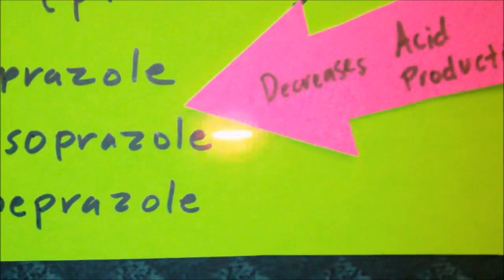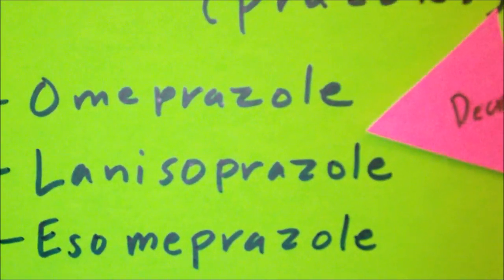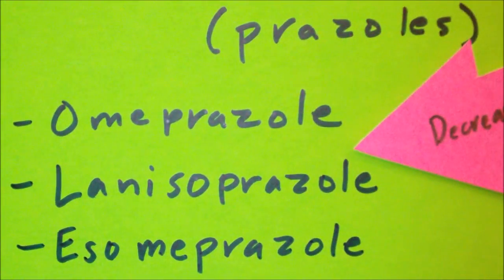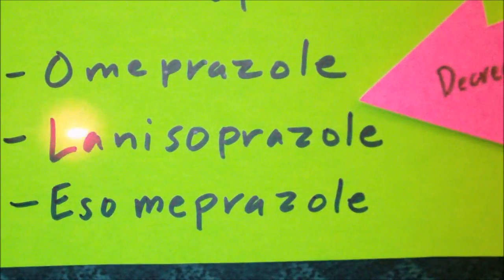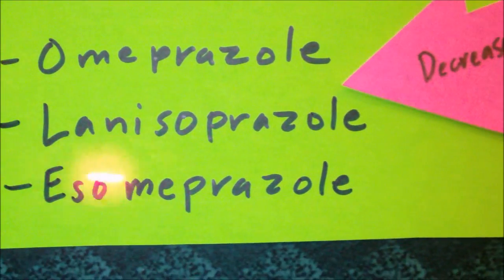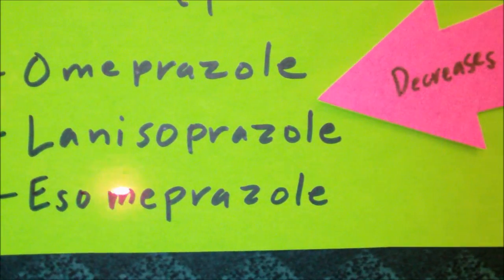The most common PPI or proton pump inhibitor drugs that you might encounter on the NCLEX include omeprazole, lansoprazole, and esomeprazole.